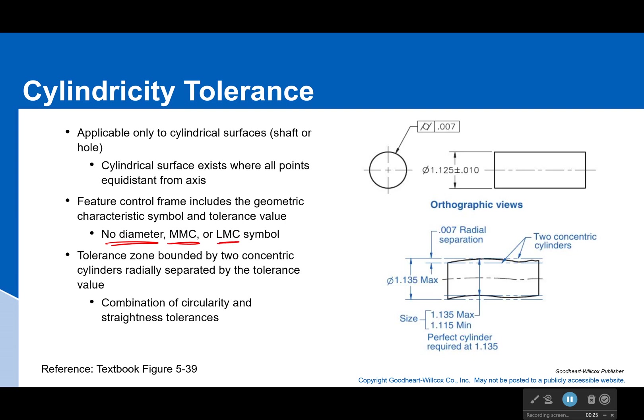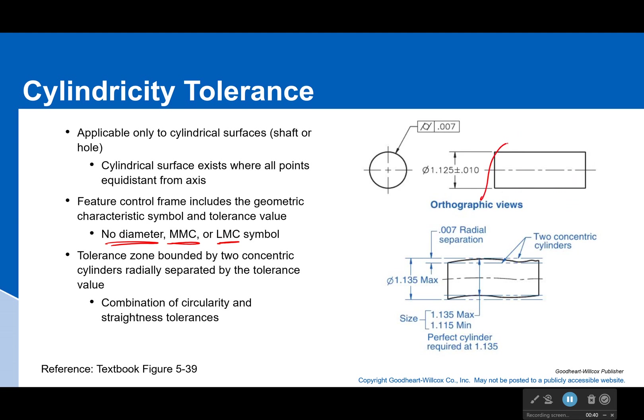Since this is constraining the entire surface at once, it's kind of like doing a bunch of circularity and straightness tolerance mixed together. Like with circularity, we measured each individual cross section by itself. This time we'll be measuring the entire surface at once and making sure that it is cylindrical.